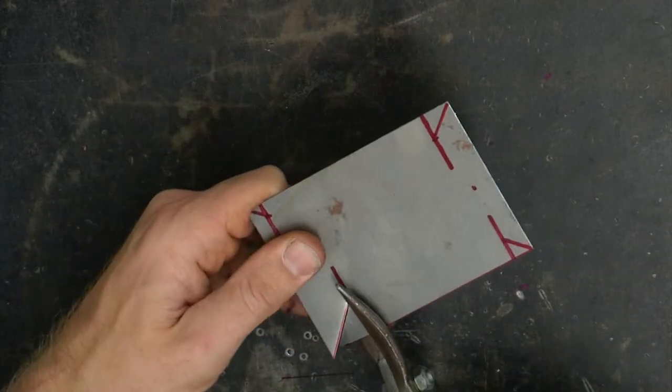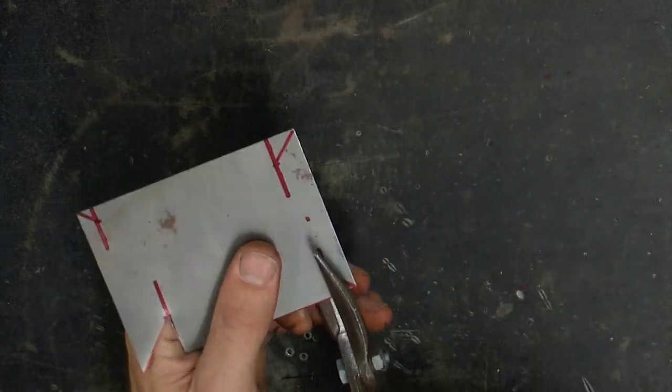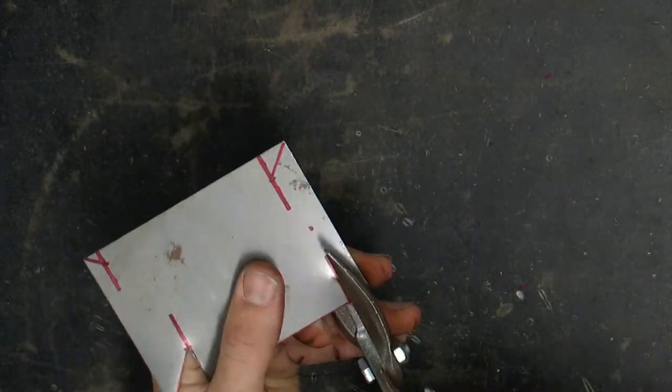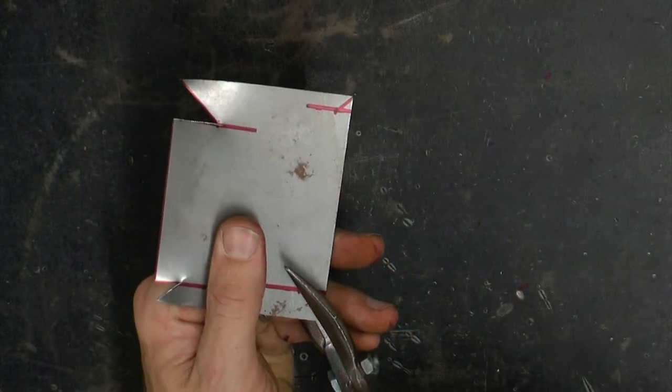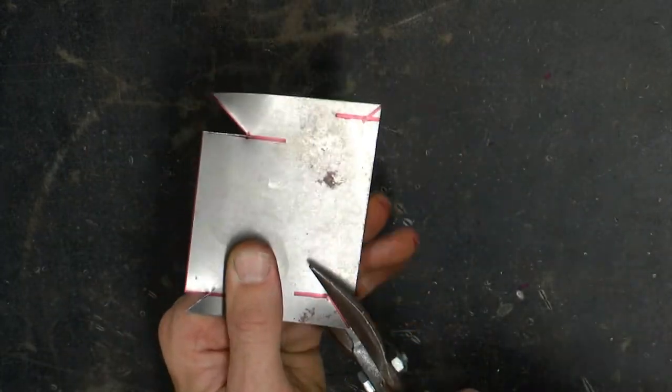After all of my corners are laid out I am ready to use the aviation snips to cut out my corners.